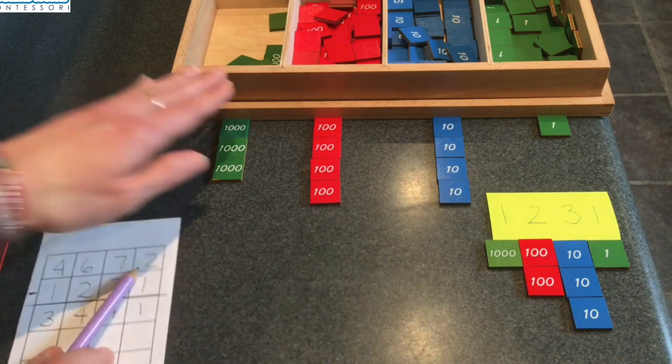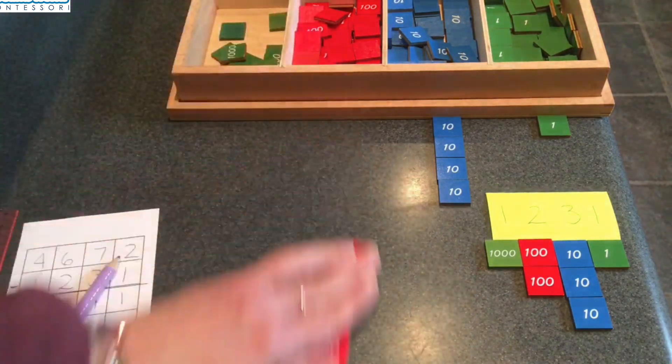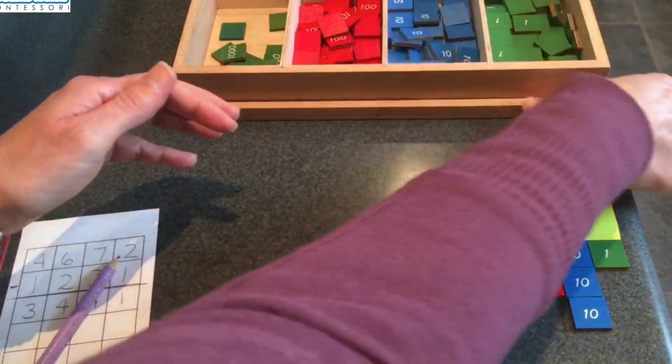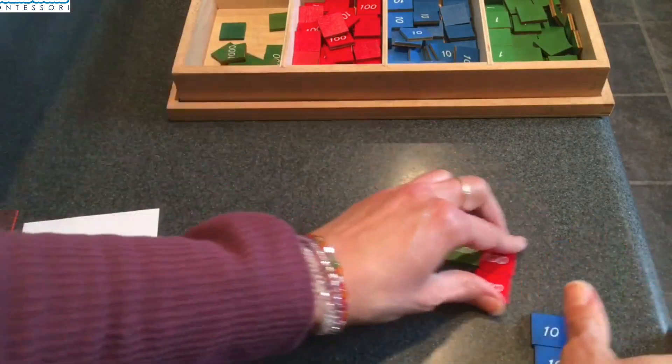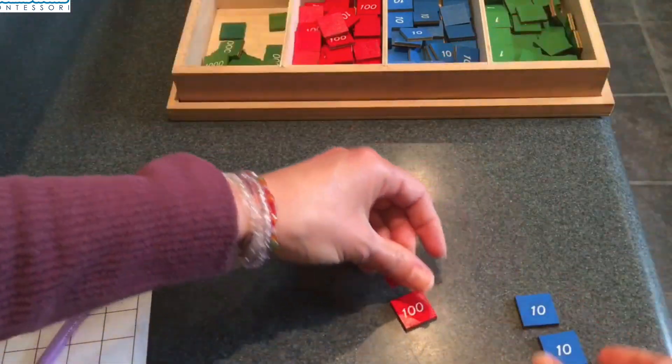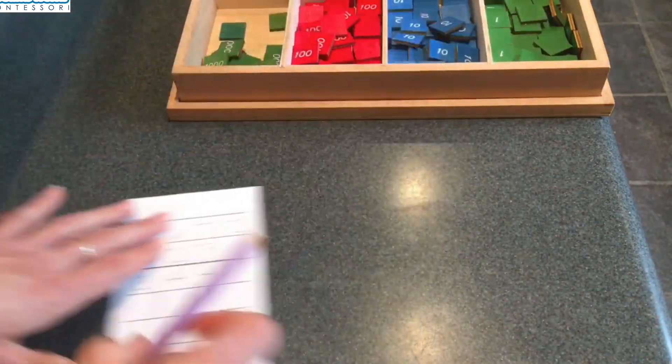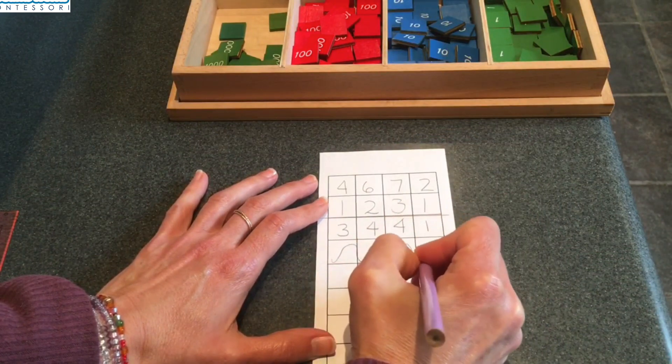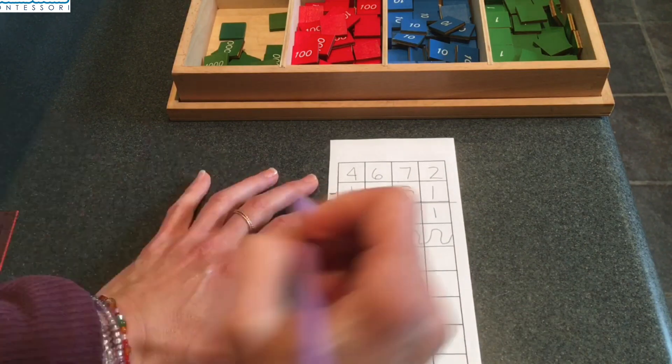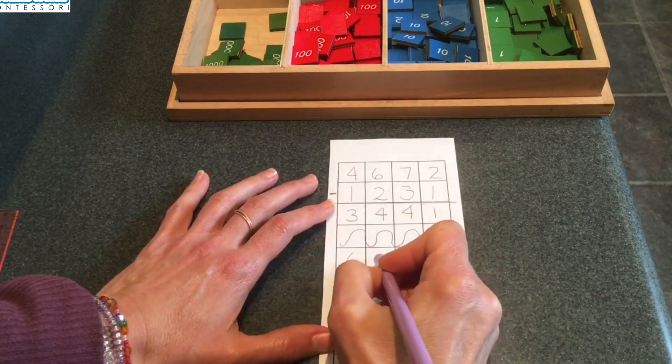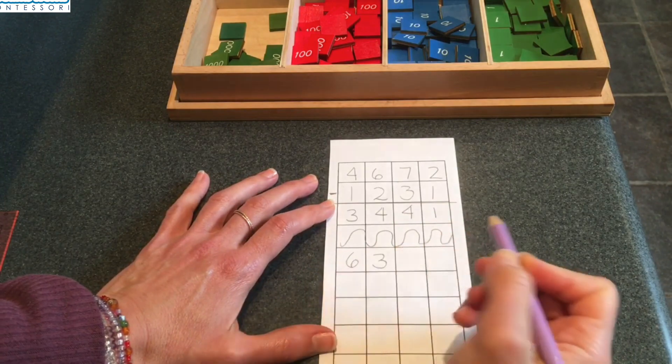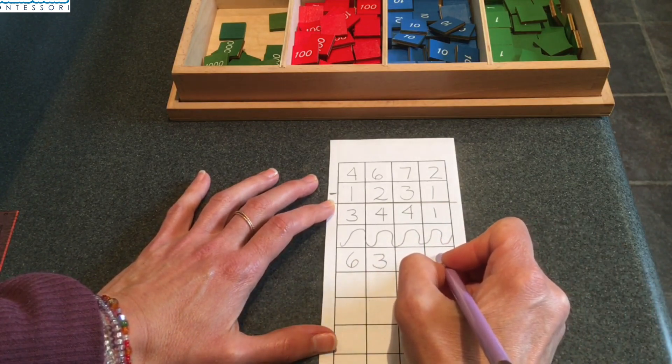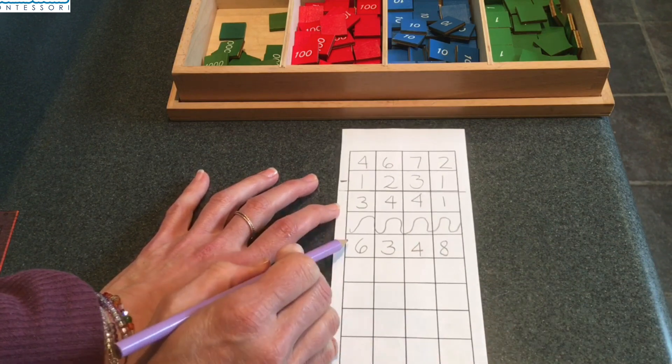Let's clear our workspace and I will write you a new problem for you to work on on your own. Let's see. I don't want to put the thousands where the units go. I've made that mistake before. I'm going to draw a squiggly line to separate one problem from the next. And I will write six thousands, three hundreds, four tens, and eight units. That's my minuend.